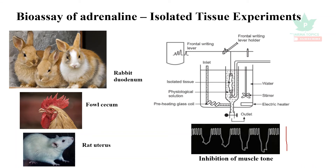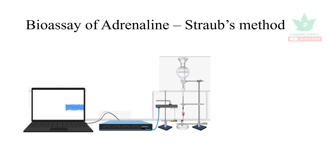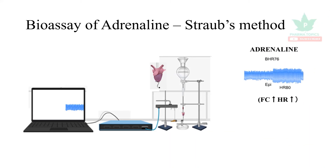The final method is the bioassay of adrenaline by Straub's method, where the tissue used is an isolated heart — either frog heart or rabbit heart. The Langendorff apparatus is used, or a common kymograph can also be used. It records the force of contraction, and the heart rate is compared for the test as well as the standard.